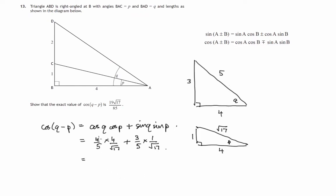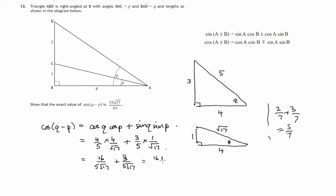Multiplying the fractions — top times top, bottom times bottom — gives us 16 over 5√17, plus three over 5√17. Since these two fractions have the same denominator, we can just add them, just like two sevenths plus three sevenths gives five sevenths. So 16 plus three over 5√17 gives us 19 over 5√17.